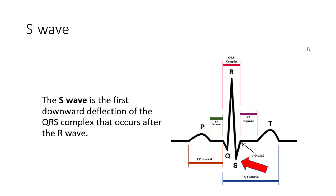The S wave is the last part of the ventricles firing. In some people it will be present and in others it won't, but it is a downward deflection going below the other deflections.